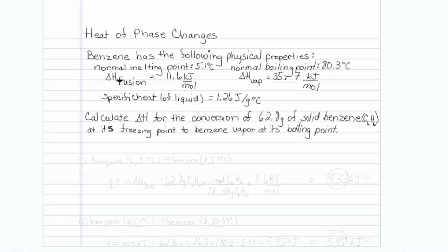This is how to get the heat associated with phase changes. Benzene has the following physical properties: melting point, boiling point, heat of fusion, heat of vaporization, and specific heat of the liquid phase. We're asked to calculate delta H, the heat change, for the conversion of 62.8 grams of solid benzene at its freezing point to benzene vapor at its boiling point.